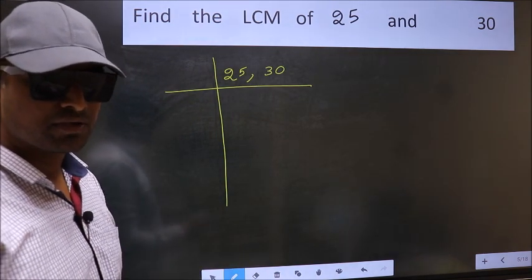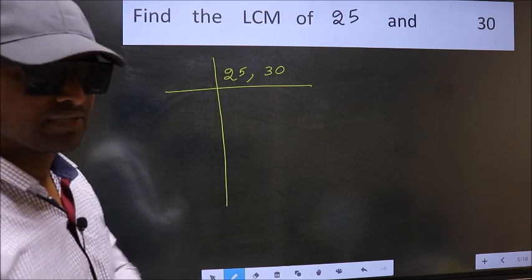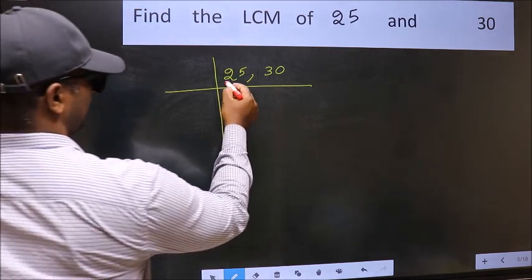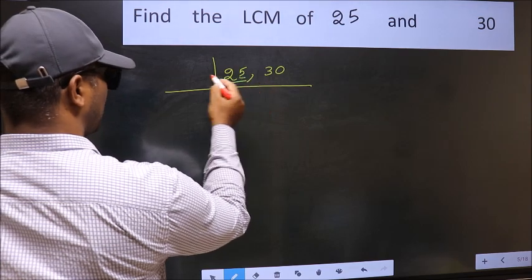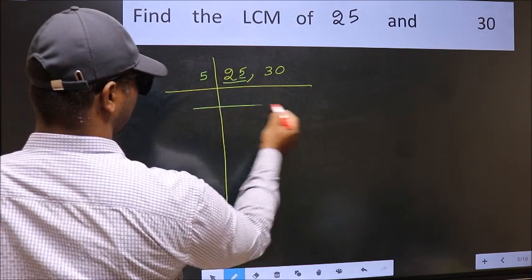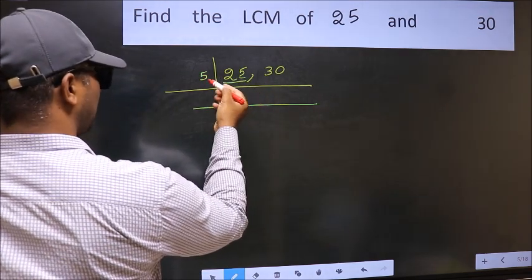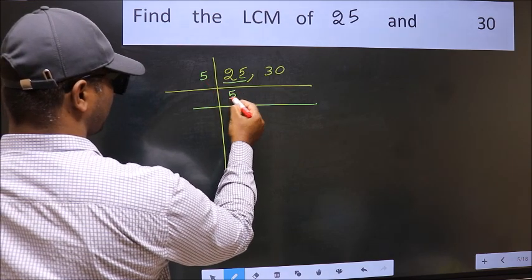Now you should focus on the first number which is 25 here. In this number, the last digit is 5, so take 5. When do we get 25 in the 5 table? 5 times 5 is 25.